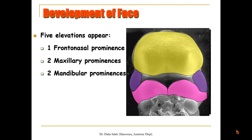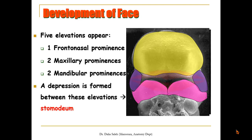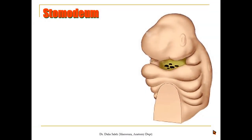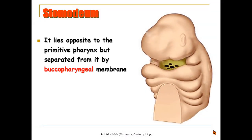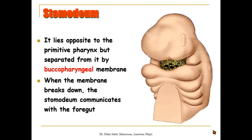Between these five elevations there is a depression called the stomodium, which will form the future mouth. At first the stomodium lies opposite to the primitive pharynx but is separated from it by a membrane called the buccopharyngeal membrane. When this membrane ruptures, the stomodium communicates with the foregut.